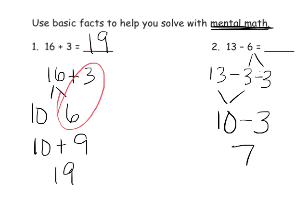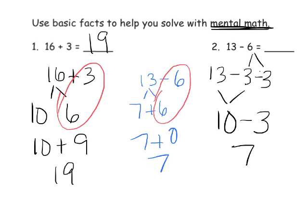Another way we could have decomposed it: with 13 minus 6, I could have taken the 13 and changed it to 7 plus 6. Now we can see that 6 minus 6 is 0, so you have 7 plus 0, which is 7. There's a couple of ways we could have decomposed this one. This is kind of a tricky one, and the answer is 7.